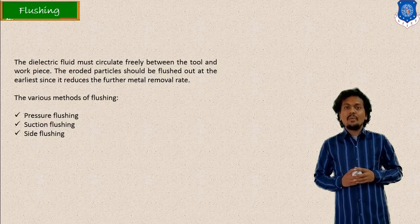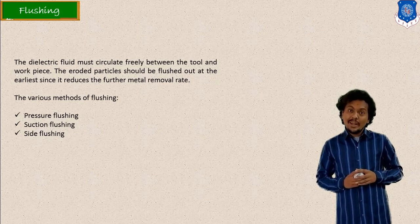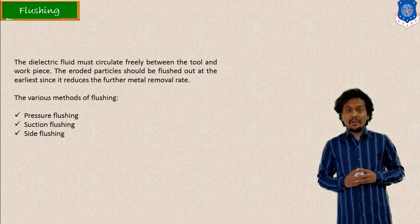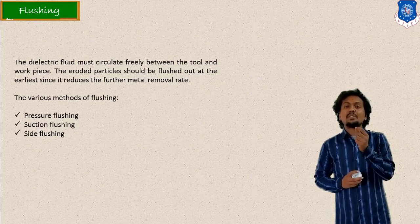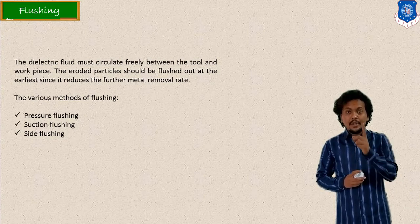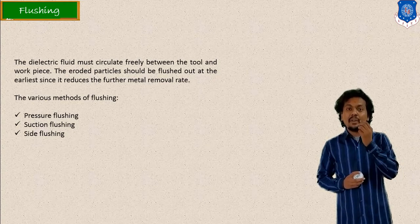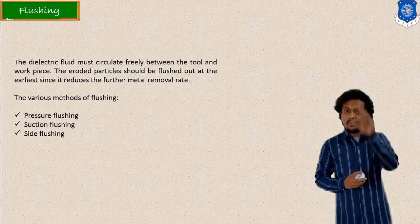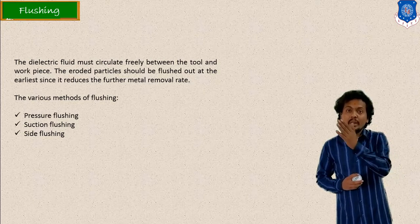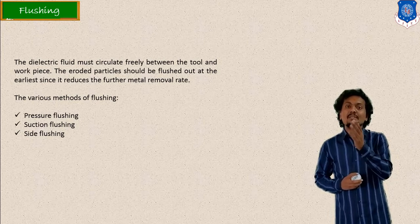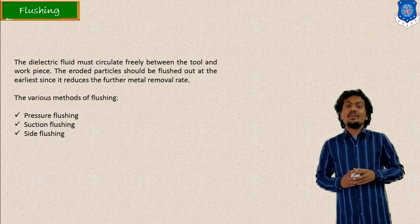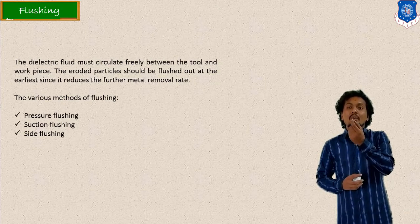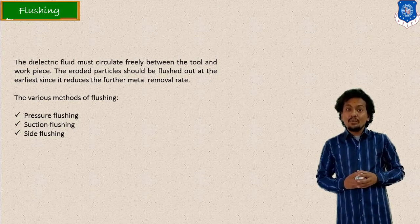The dielectric medium works as an insulating material. Spark generation is very intense when you use dielectric fluid. When electricity is supplied and spark is generated, the material melts and is removed from the zone. This material suspends near the zone of the tool and workpiece, and when scrap particles are present between the tool and workpiece, it will reduce the spark intensity, which is not desirable.